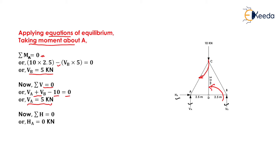Applying the third equilibrium condition — summation of forces in the horizontal direction equals zero — there is no force acting in the horizontal direction except support reaction HA. So HA equals 0 kilo Newtons. In this way we have determined all external reactions: VA = 5 kN, VB = 5 kN, and HA = 0 kN.